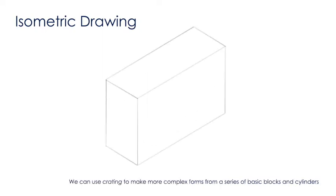We can use crating to create more complex shapes out of a series of basic blocks and cylinders. So, if we start off by drawing a simple cuboid as our main body, we can then add another cuboid to the front of it, and then turn that into a cylinder, as we've seen previously.